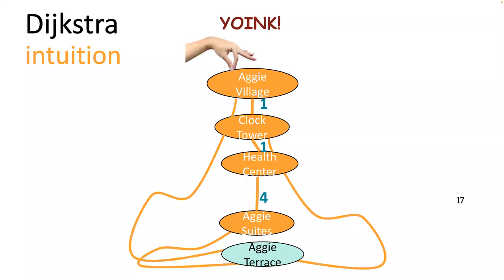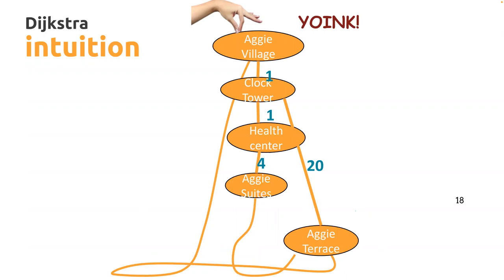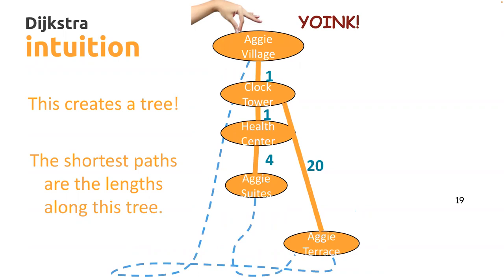The shortest distance from Aggie Village to the Clock Tower is one. The next node picked up is the Health Center, also distance one away. Then Aggie Suites, then finally Aggie Terrace — and you realize the shortest path is actually 21: go to Clock Tower first, then to Aggie Terrace. This creates a Dijkstra tree, just like BFS and DFS each create a tree. The shortest paths are the lengths along this tree.